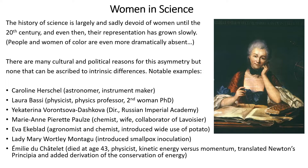We can pick out just a few examples. Carolyn Herschel, who we'll talk about in more detail, was an astronomer and instrument maker and prominent intellectual of her time. There was Laura Bassey, a physics professor and the second woman to have a PhD in her country. And Anne-Marie Perrette-Pulse, director of the Imperial Academy, was a chemist, wife of Lavoisier, and a major scientist in her own right.